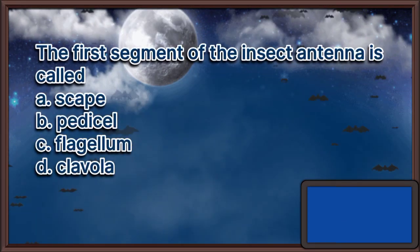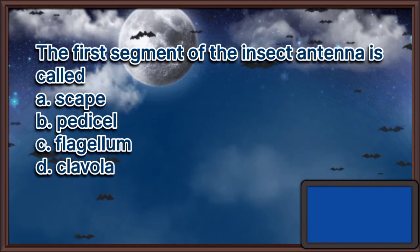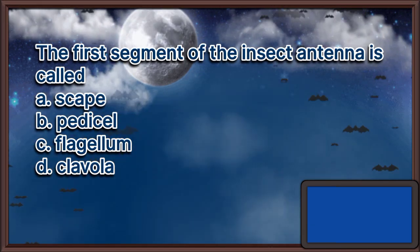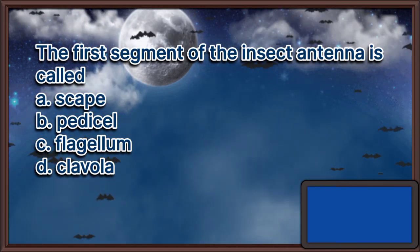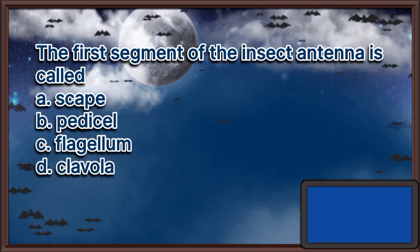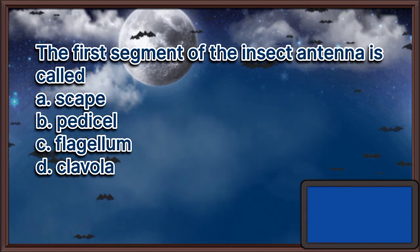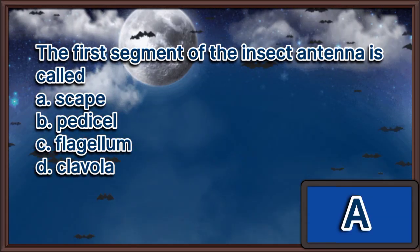The first segment of the insect antenna is called: A. Scape, B. Pedicel, C. Flagellum, D. Clavula. The answer is letter A.